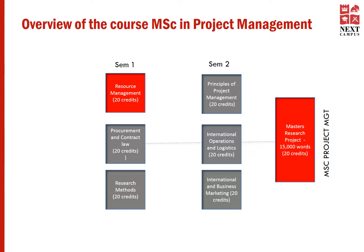Now let's have a look at the program structure. I hope you're well familiar with the program structure. As you know, the resource management module is in the first semester and it's a 20 credit subject. Your third semester is a 60 credit project and you will apply what you learned in the other six modules in the first and second semesters. Of course, what you learn in this module is going to be greatly used in your project work and thereafter in your real life projects.